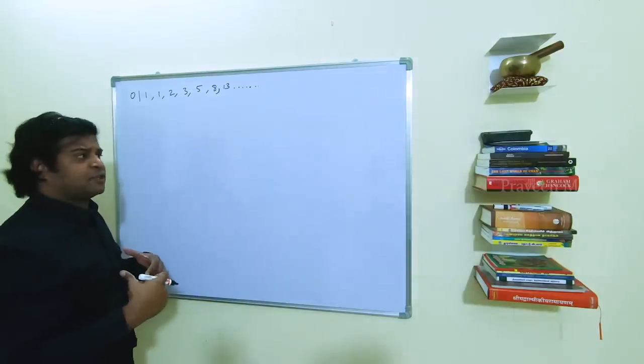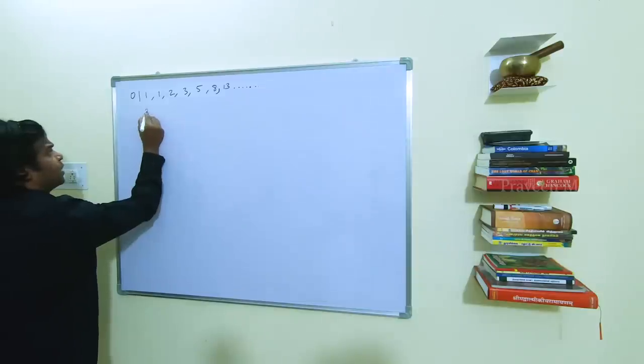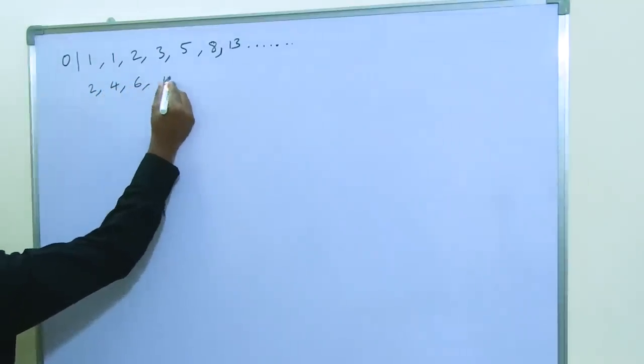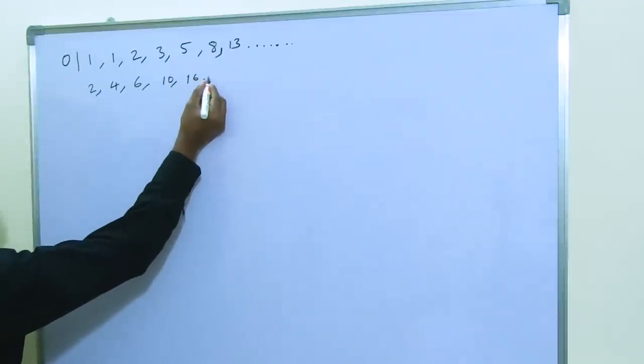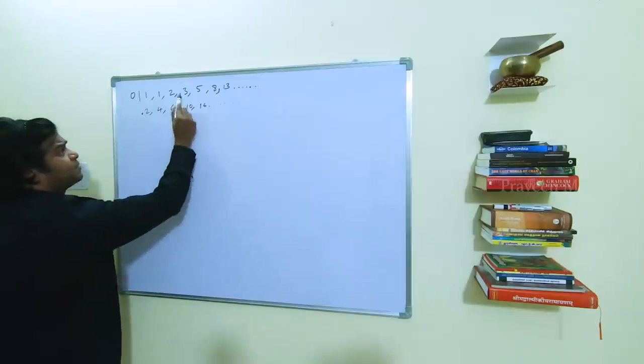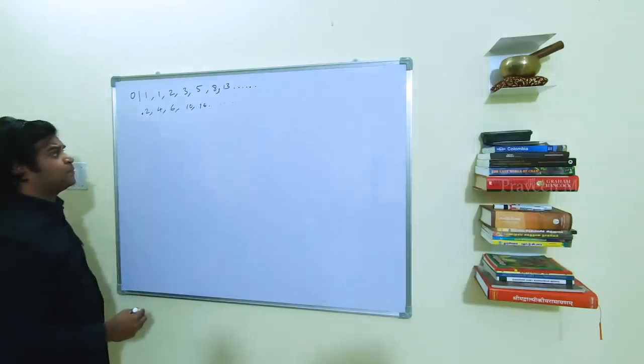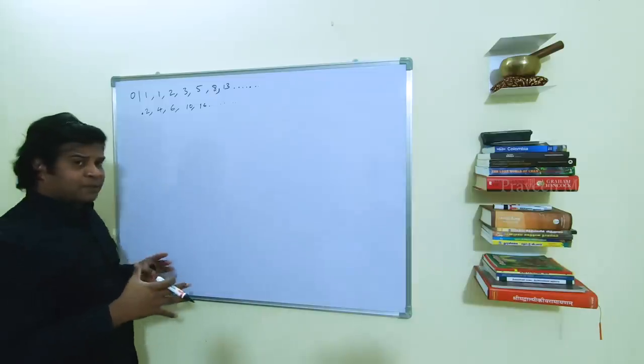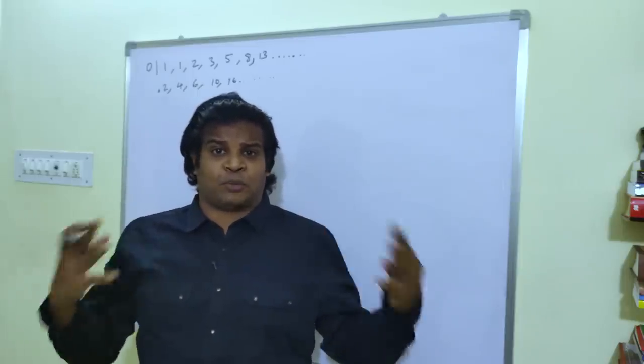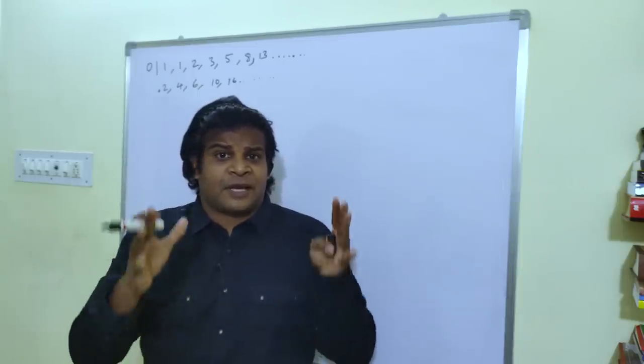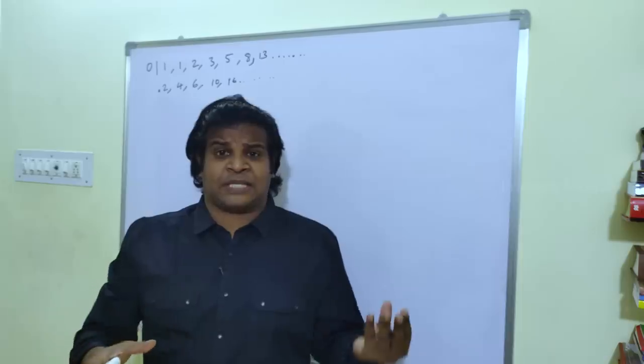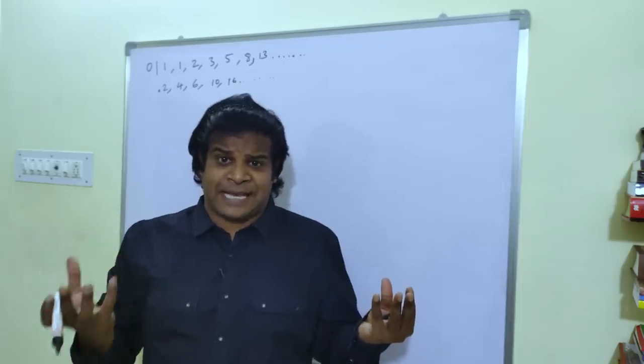Why not just make up another series like this? For example, why don't we say 2, 4, 6, 10, 16. What is different between this series and this Fibonacci series? The Fibonacci number was not a random number made up by human beings, it is the number of the gods and this is the difference between life and death.